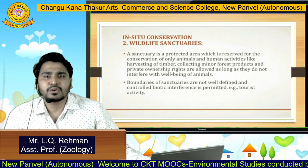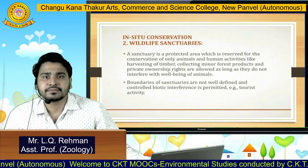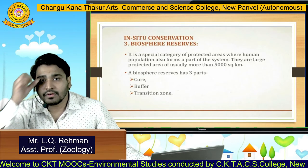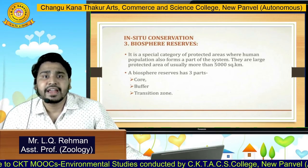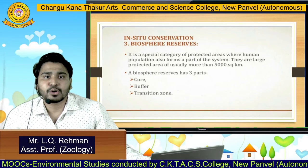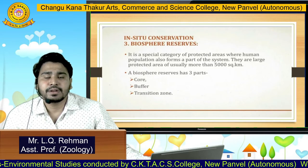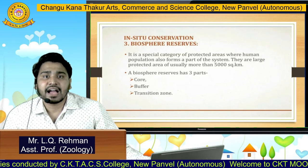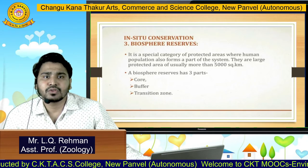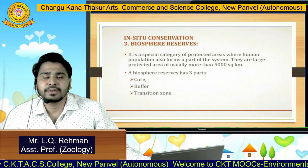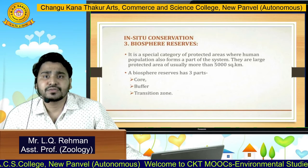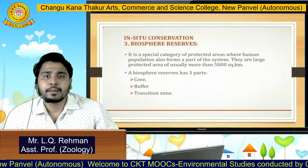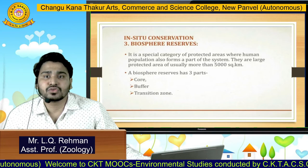Next is the biosphere reserve. What is a biosphere reserve? It is a special category of protected areas where human population also forms a part of the system. They are large protected areas of usually more than 5000 square kilometers. A biosphere reserve has three parts: a core zone, buffer zone, and transition zone.